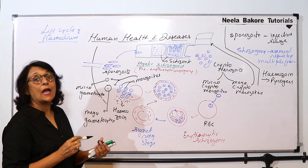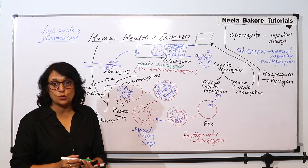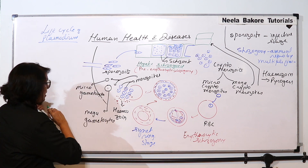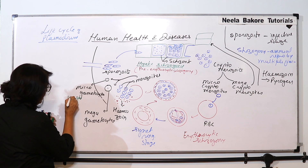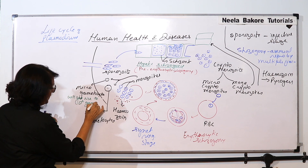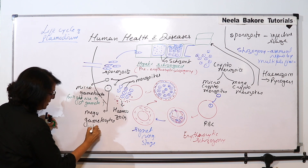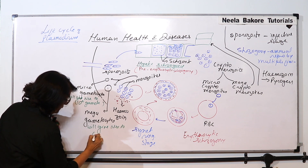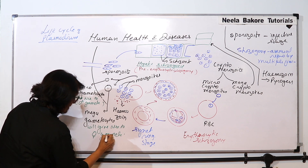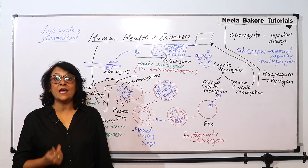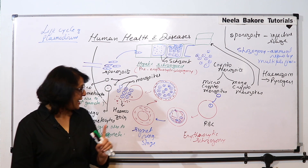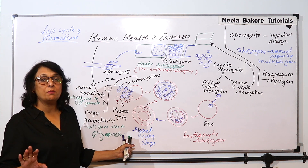They are not the gametes — they are the cells which will give rise to gametes. That means gamete formation is not taking place in humans. So these are the precursor cells which are going to form male and female gametes. That means gamogony has started in humans but gamete formation has not yet taken place.